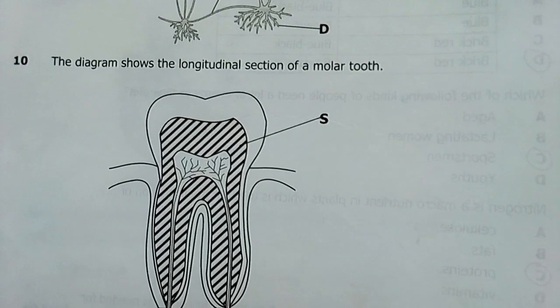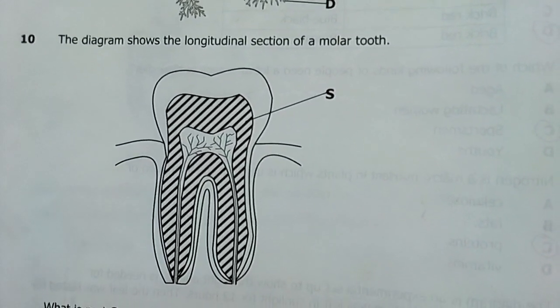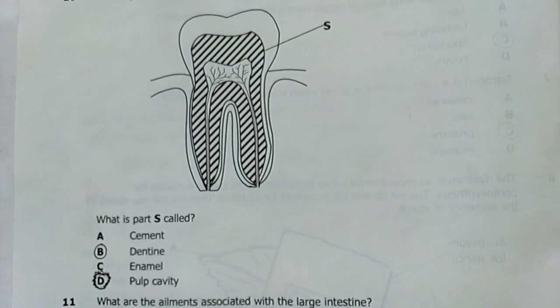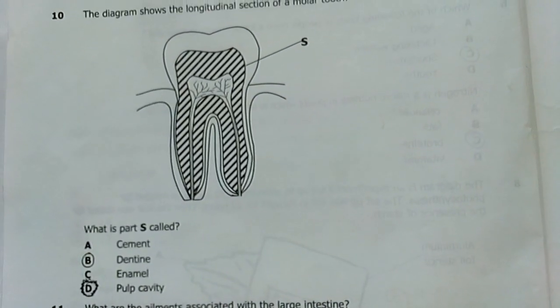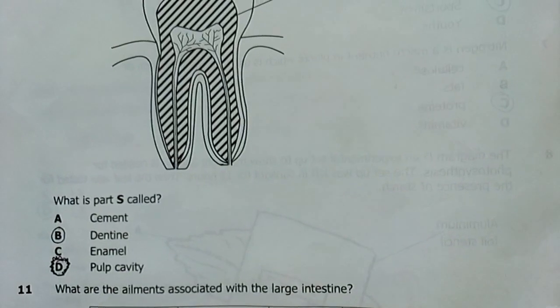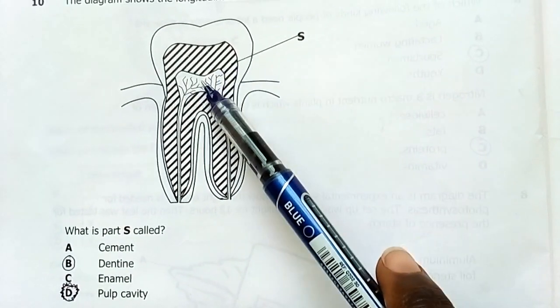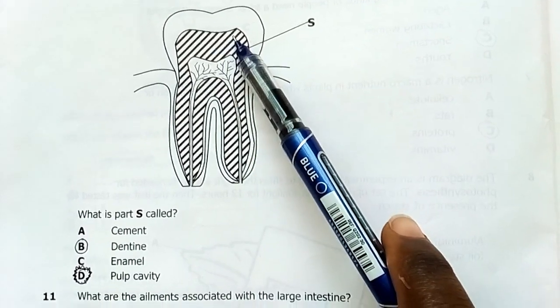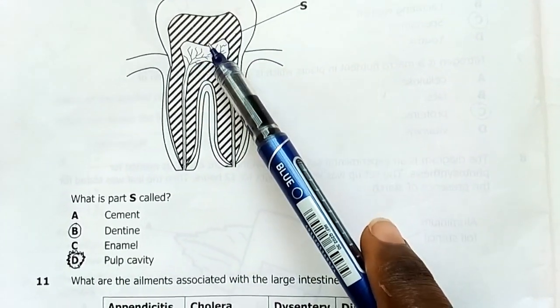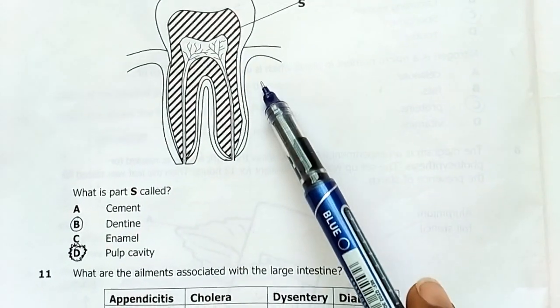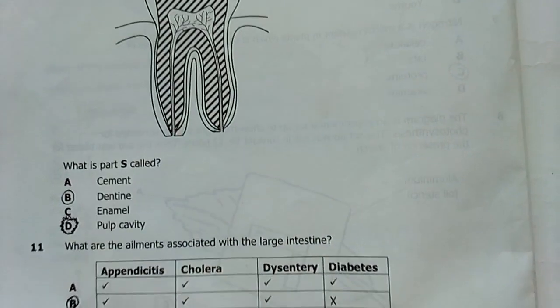Ten, the diagram shows the longitudinal section of a molar tooth. What is part S? I was almost saying pulp cavity, but I realized pulp cavity is this here. This is the dentine. Enamel, dentine, pulp cavity. Then, you've got the cement there. Then, the gum is here. Then the jaw is there. So, the answer is dentine.